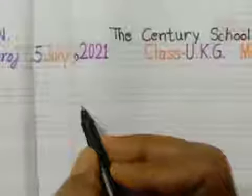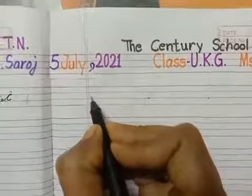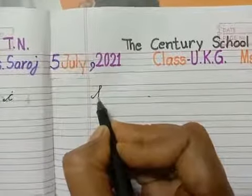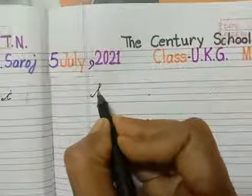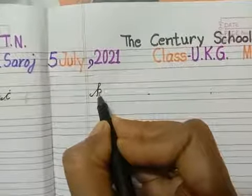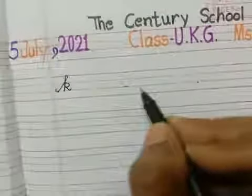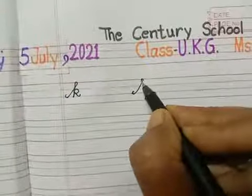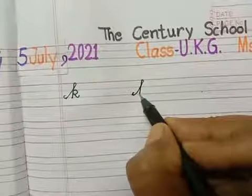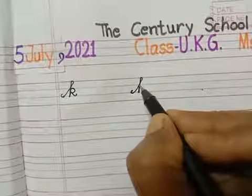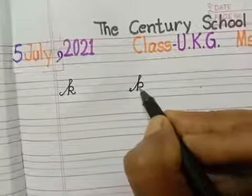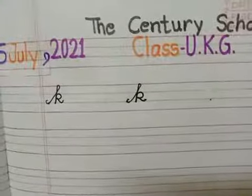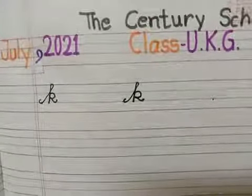Make curve. Slot line, touch the red line, go back, come down, touch the black line. Go up on the previous line and leave it. Once again, make curve. Slot line, touch the red line, come down, touch the black line. Go up on the previous line, touch the line, come back and leave it. It's our small letter K of alphabet.